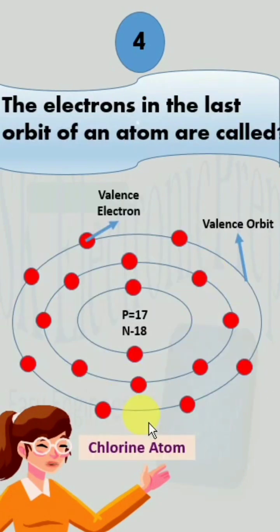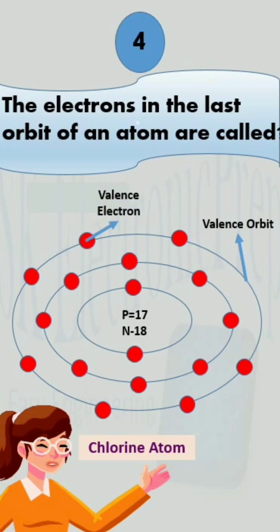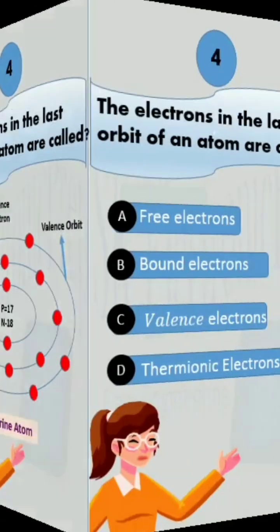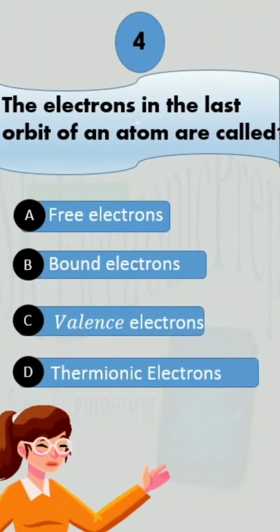This is the atomic structure of a chlorine atom. The outermost orbit is the valence orbit and the electrons in that orbit are valence electrons. So the answer is...